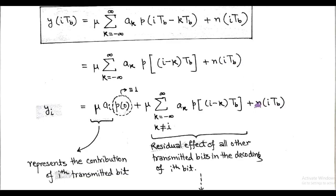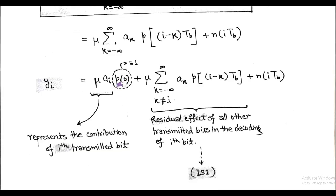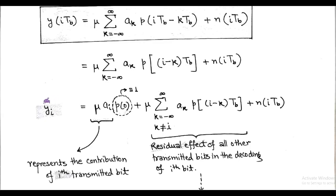We assume that the pulse p(t) is normalized, so we put p(0) = 1. So the sampled output, denoted by y_i as a shorthand representation, is equal to: y_i = μ · a_i + μ · Σ a_k · p((i−k)·T_b) + n_i.